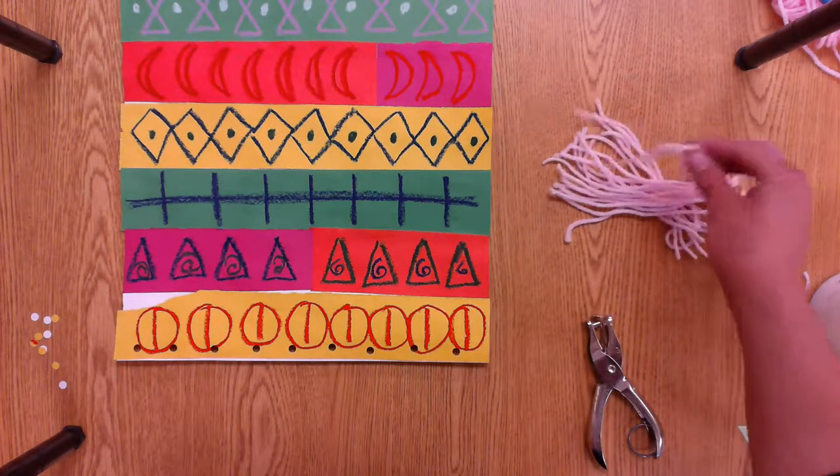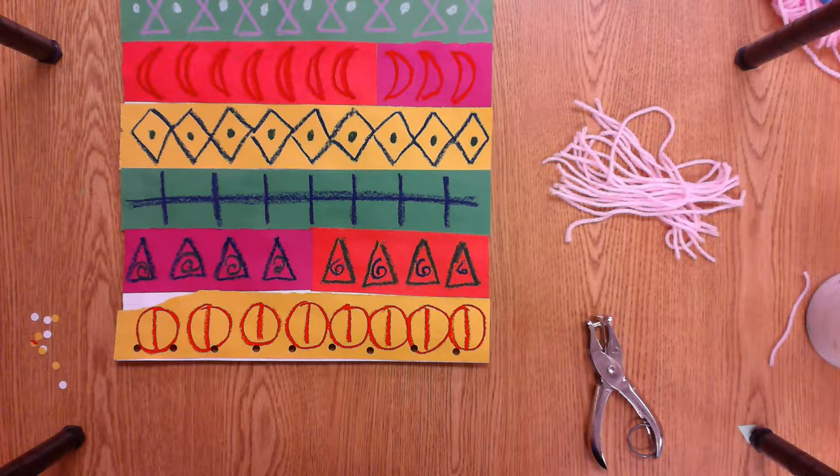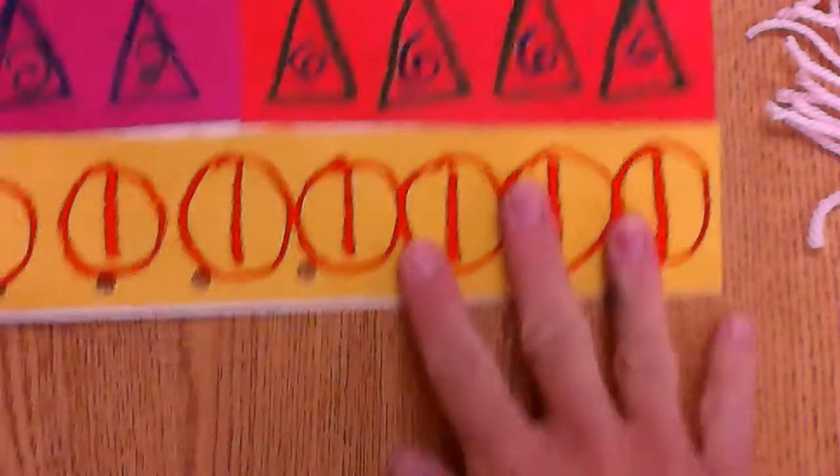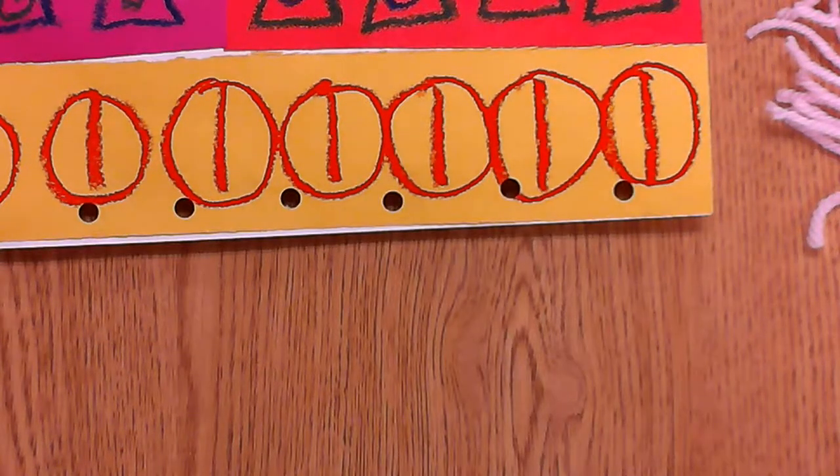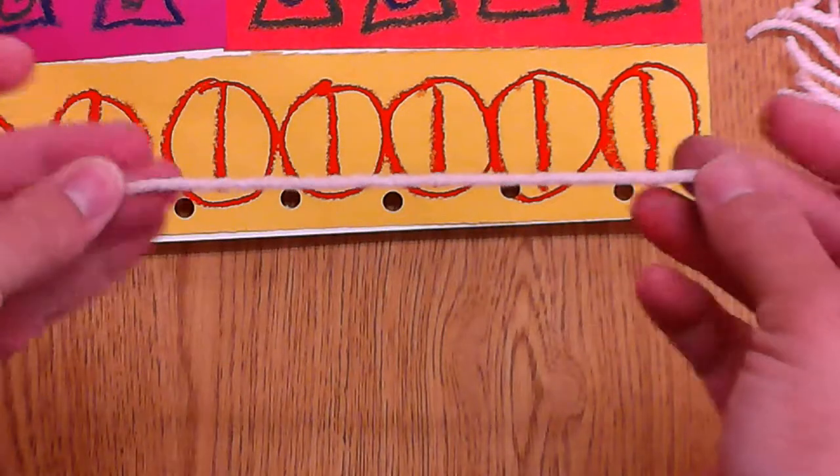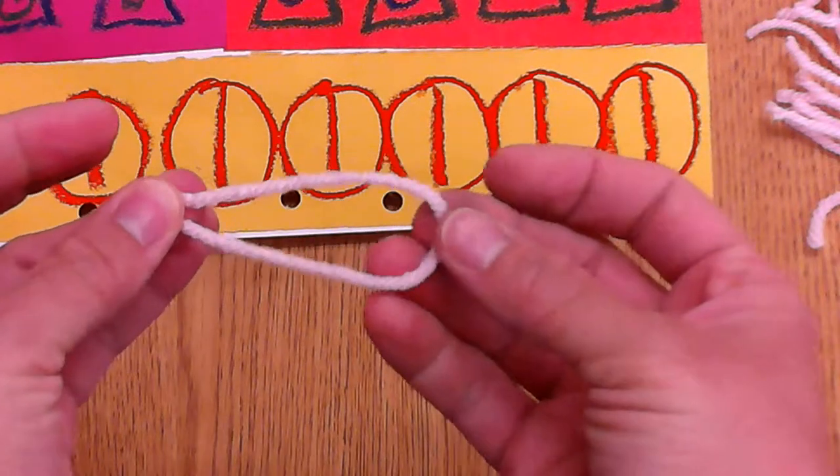And then you're going to take your yarn and you're going to put it into the loops. Now I'm going to try and zoom in and see if that works so that you can see how I do the loops. Hopefully you can see that. Now I have my yarn here. It comes in a short string. I'm going to fold it in half so it makes a loop. See the loop there?